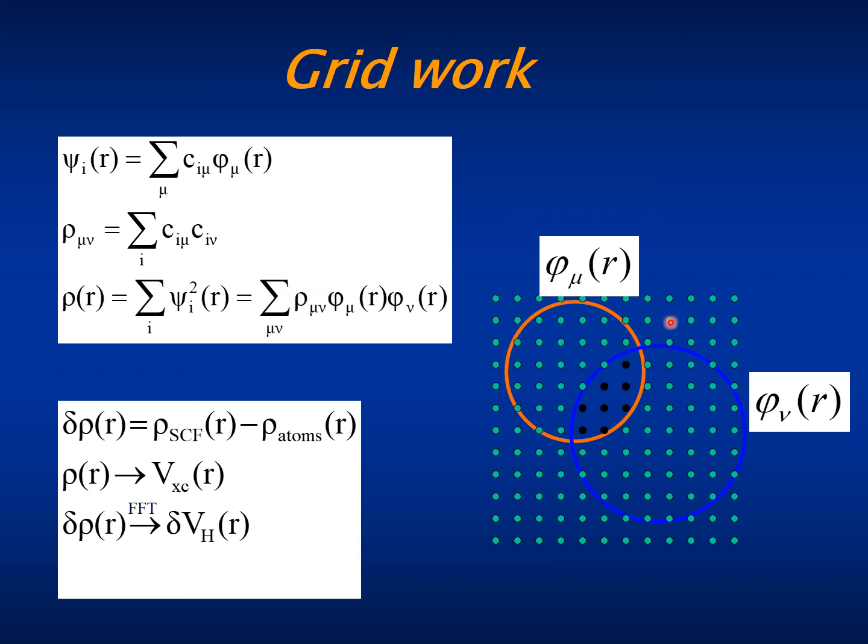Then we can find the density at every grid point as a product of pairs of basis orbitals times the density matrix elements. Once we have the density at every grid point,